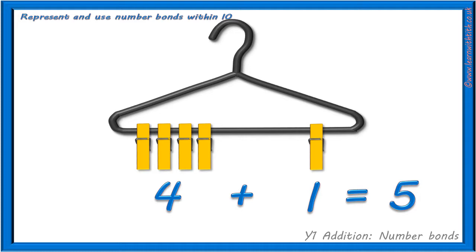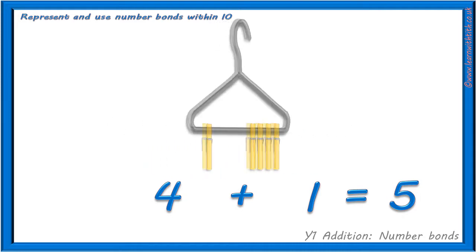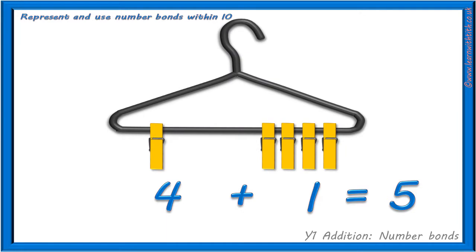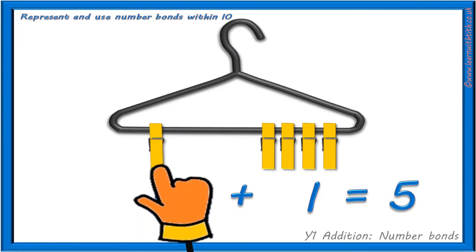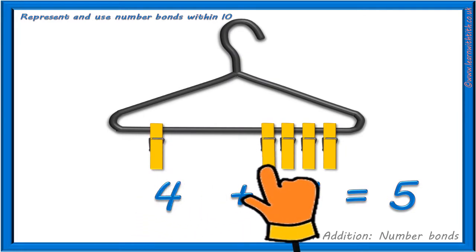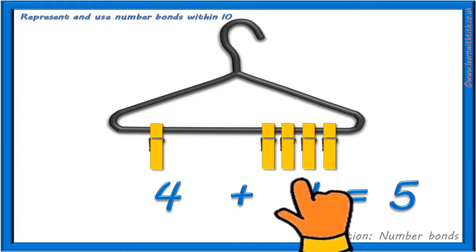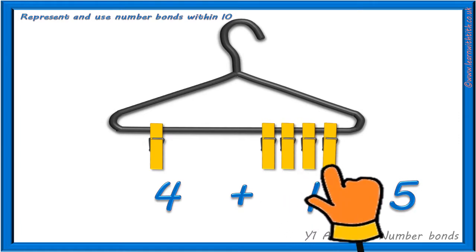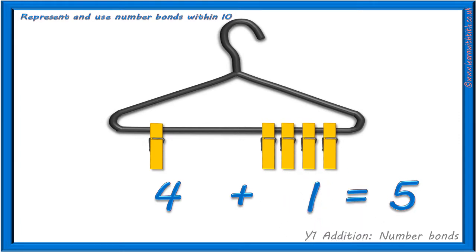And if we turn our coat hanger around, we have 1 peg on the left and 1, 2, 3, 4 pegs on the right. How could we write this as a sum? We could write 1 add 4 equals 5 pegs.